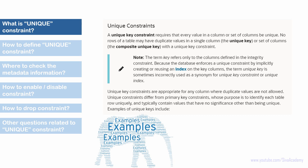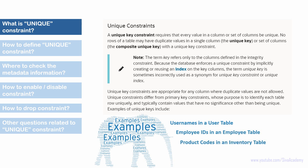Before we see how to define a unique key constraint, let us look at real-time examples where we actually use unique key constraints. Here are a few examples: usernames in a user table, employee IDs in an employee table, a product code column in an inventory table, email address in a customer table, and an account number in a banking system. These are potential columns where we can define a unique key constraint.